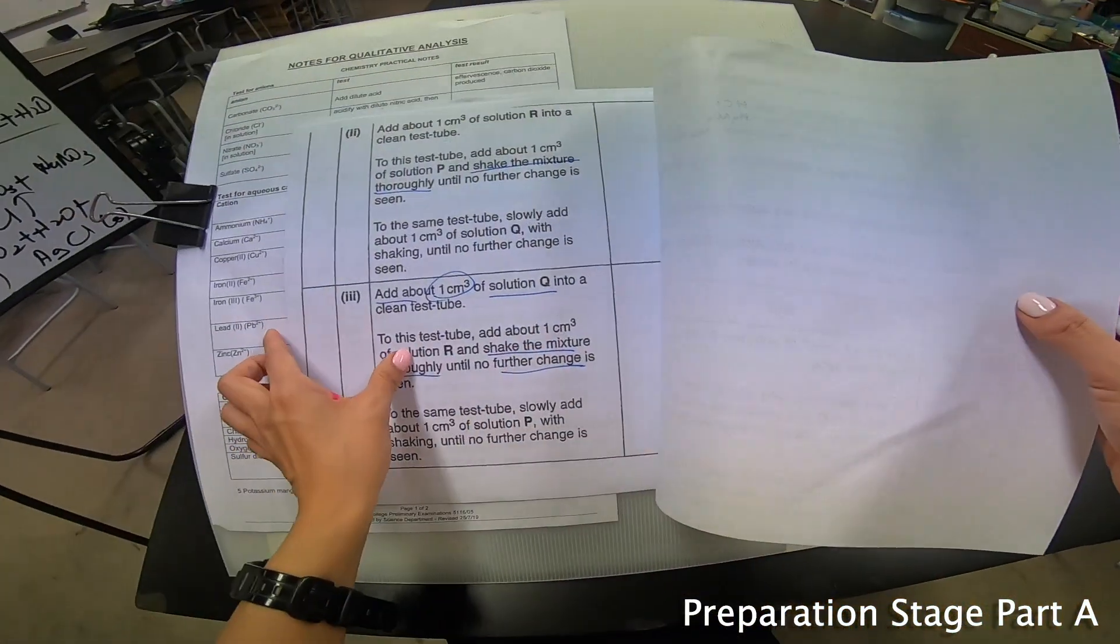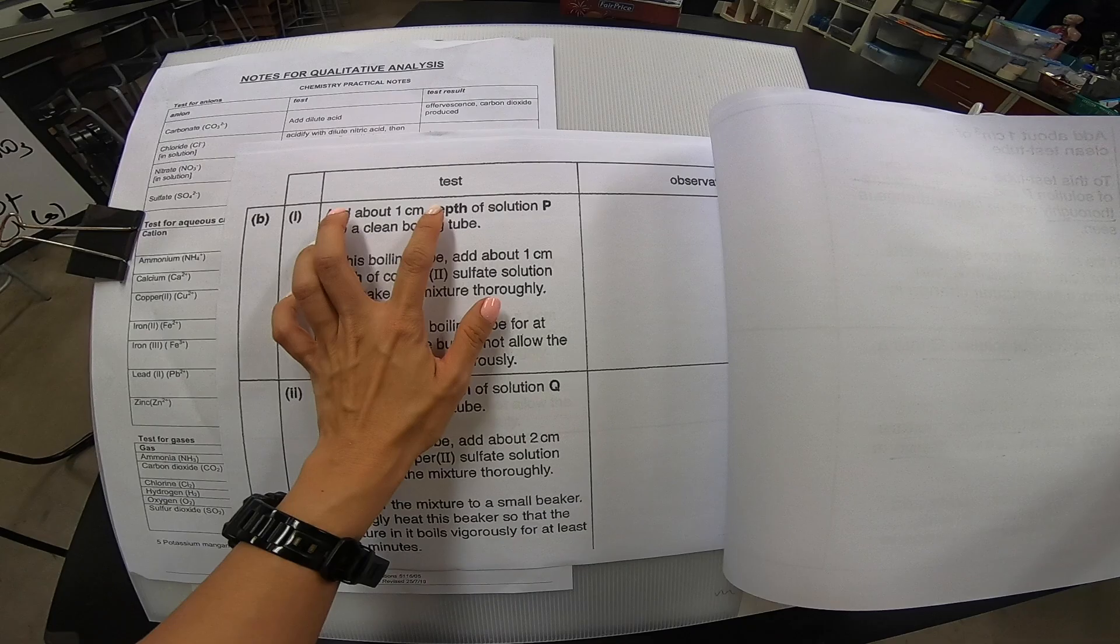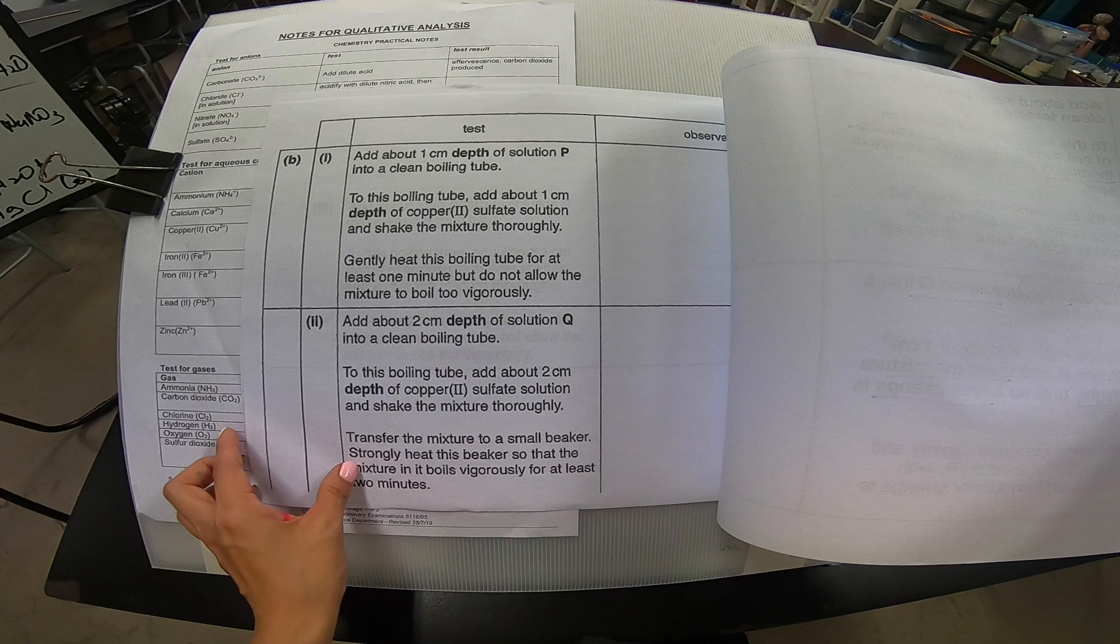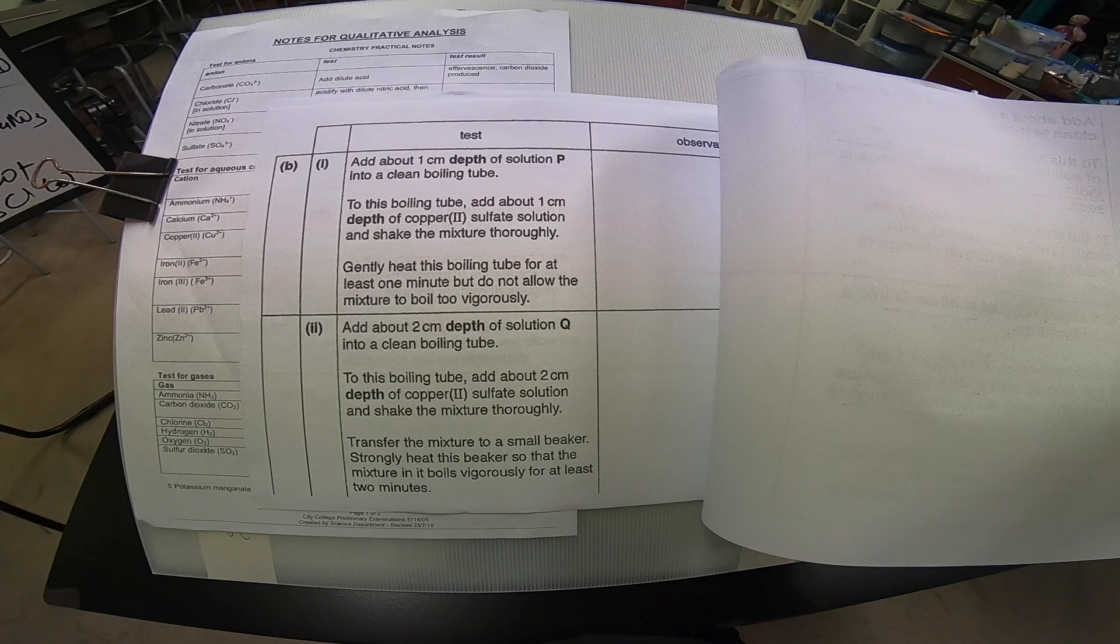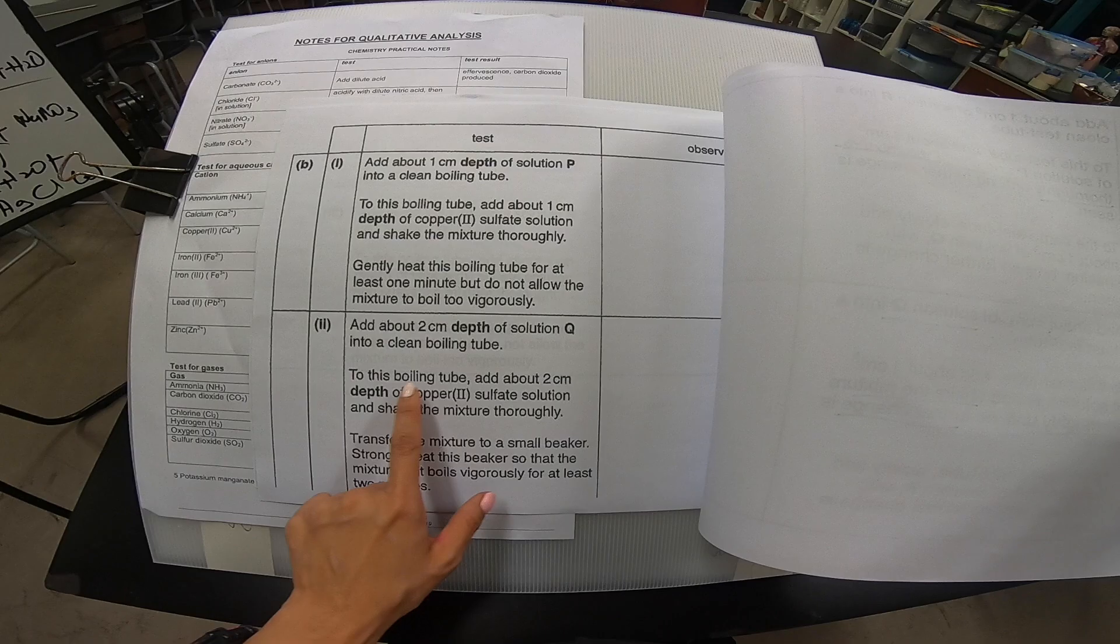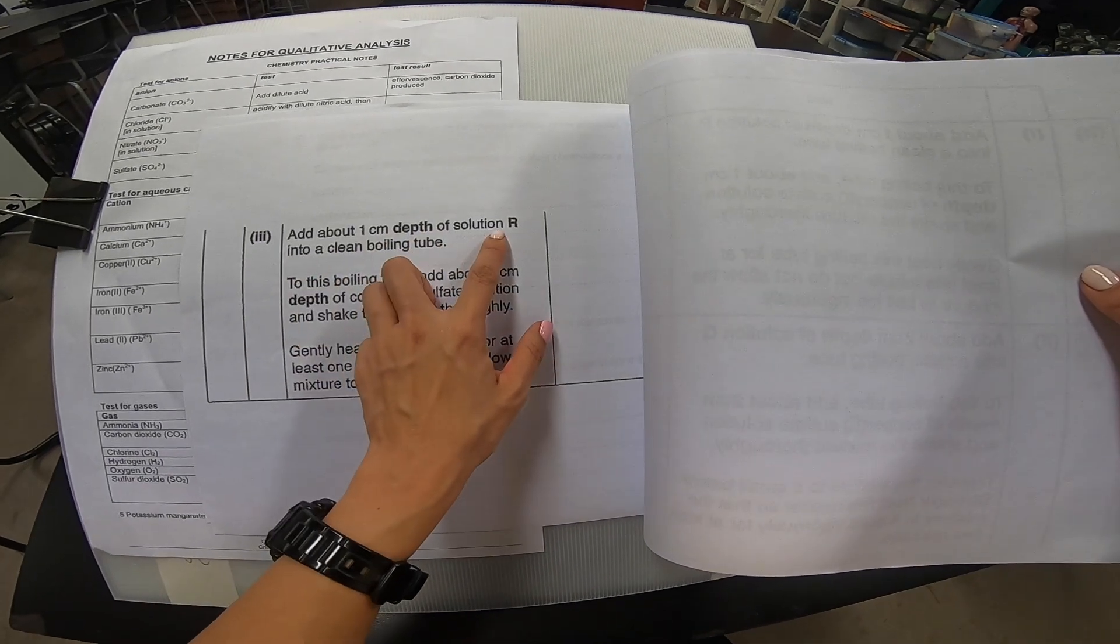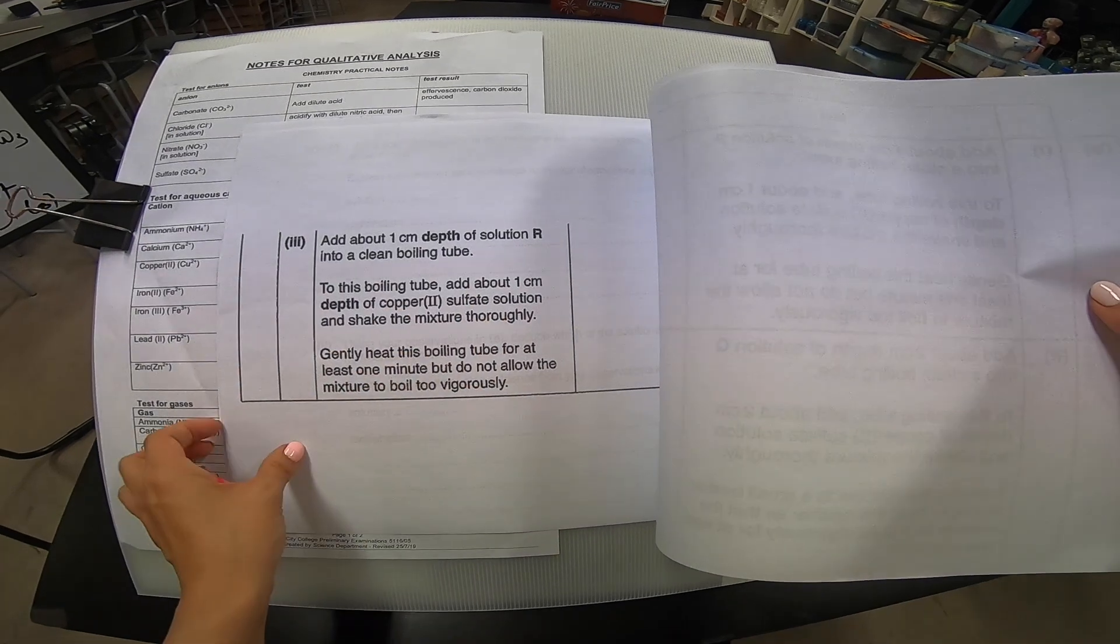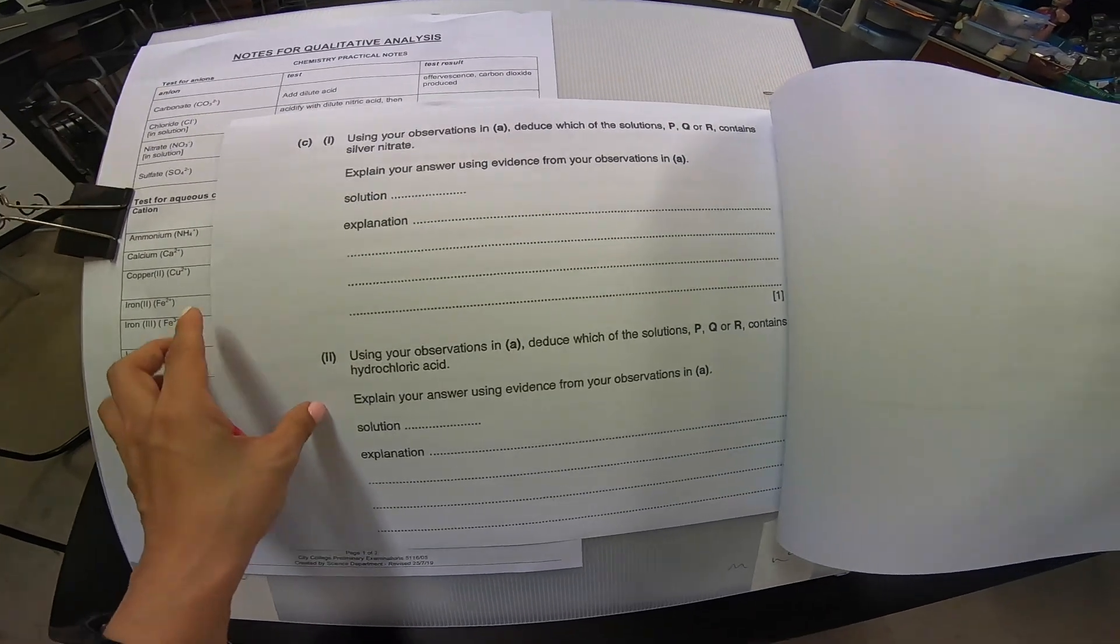Same thing, Q, 1 cm³ of R, and to this, another 1 cm³ of P. Remember, all these are estimated, but I have them all written down already. Let me put this back. Coming back to here, let's see how much more preparation do I need to do. Now, to the next part, it seems like they say add about 1 cm depth of solution P into a boiling tube. And this time round, you add copper sulfate. It seems like this portion here, I have a quick glance over it. It seems that it's copper sulfate again. And then there's another copper sulfate again over here.